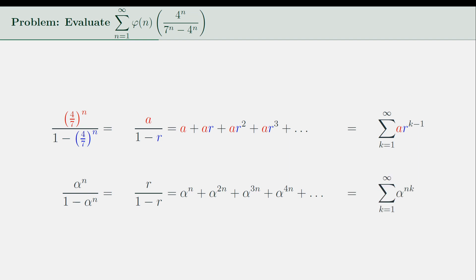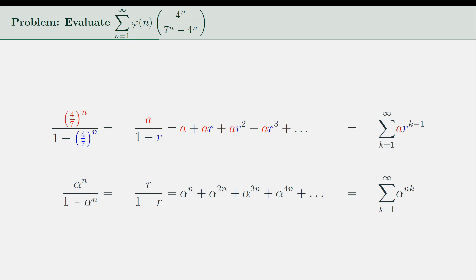This is valid because α^n is always less than 1 for all positive integers n, making the geometric series convergent. In sigma notation, that's the sum of α^(nk), where k runs from 1 to infinity. And so the expression could be rewritten as a double summation.